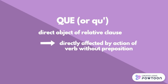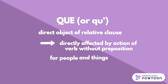Que is always used as a direct object — it is directly affected by the action of the verb without a preposition. In English, you can use that for things, who or whom for people, or nothing at all. In French, you always use que for both people and things, and you cannot drop it.